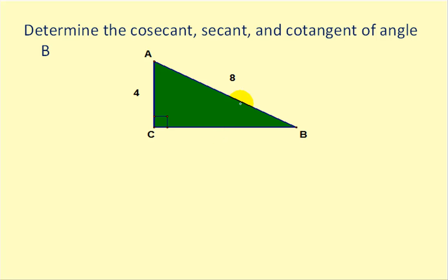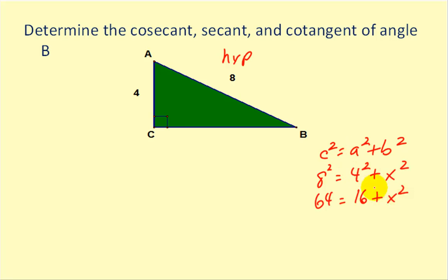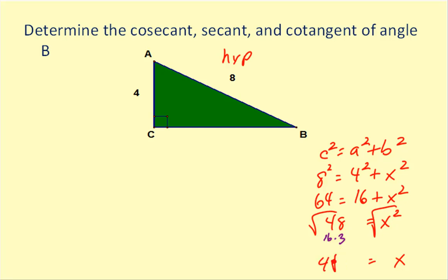Let's try one more. We're missing the length of this third side, and the hypotenuse is 8. Going back to the Pythagorean theorem: 8 squared equals 4 squared plus x squared. Subtracting 16 from both sides and taking the square root, x equals the square root of 48. Since 48 is 16 times 3, and the square root of 16 is 4, that equals 4 square root 3.